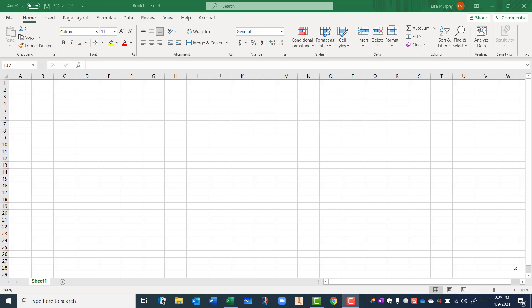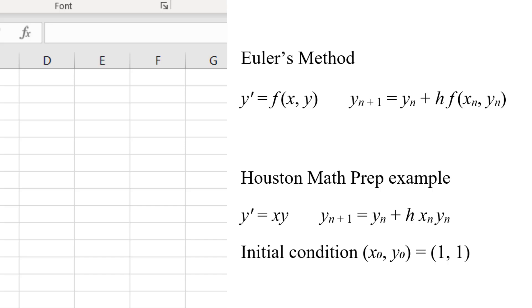Open an Excel document. I'm going to zoom in on this a bit to make it easier to read. First, we set the Step Size, h. I'm using h equals 0.1 to match the Houston video. Then, we put headings on our columns to keep track of what we are doing. These are the same columns used in the Houston video.